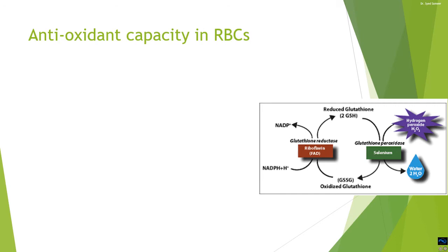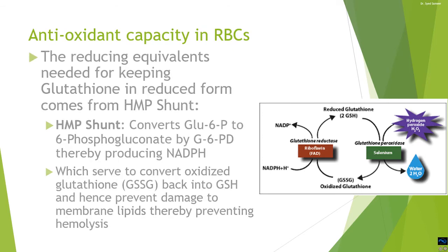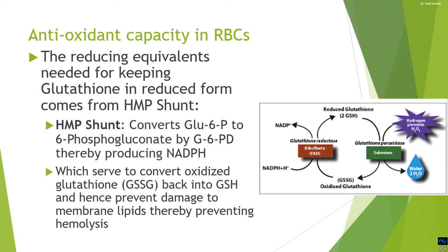The question now arises: how do RBCs keep this antioxidant system viable for their maximum half-life of 120 days? This is provided by the HMP shunt, which contains a specific enzyme that converts glucose-6-phosphate to 6-phosphogluconate. This reaction is catalyzed by glucose-6-phosphate dehydrogenase (G6PD), which also produces NADPH. This NADPH feeds into the glutathione peroxidase system, keeping glutathione always in its reduced form for scavenging reactive oxygen species.